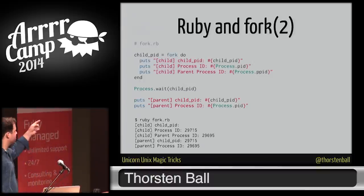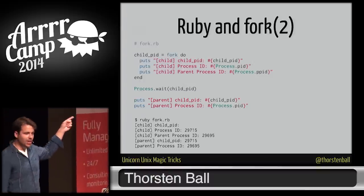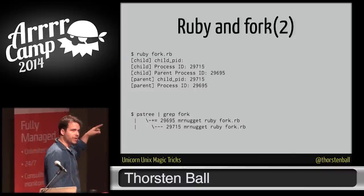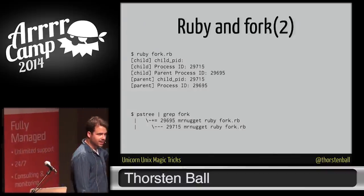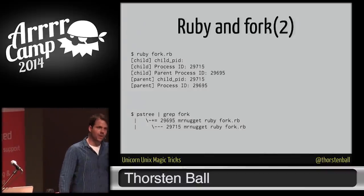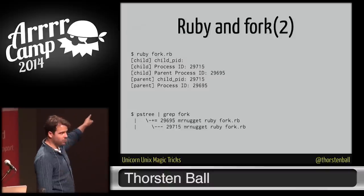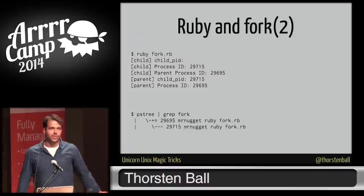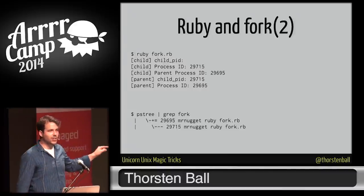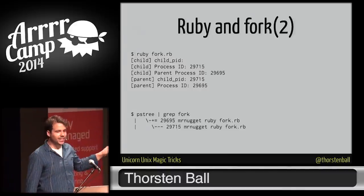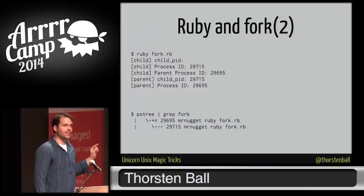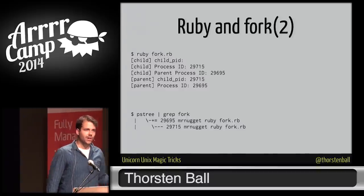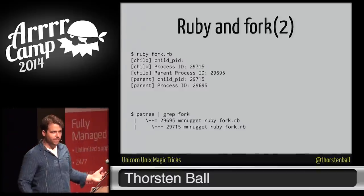If we put some sleep statements in this example and run it again, then use a tool like PS, we can see we now have a parent process and a child process, and the process IDs match up. It's really that easy to create a new process on a Unix system — you just use fork. In Ruby, you just use fork.